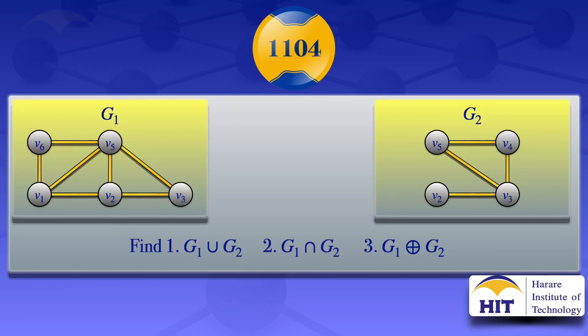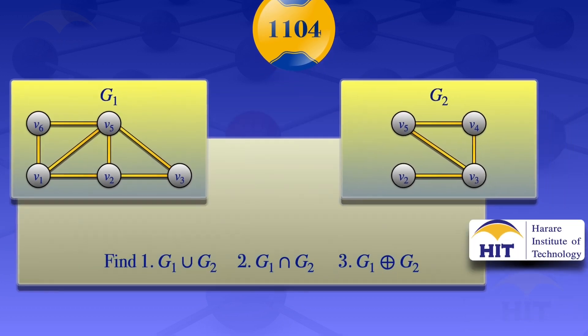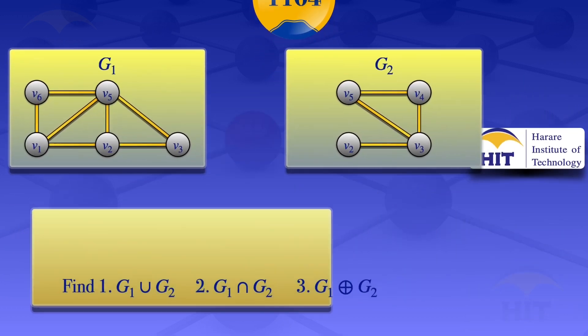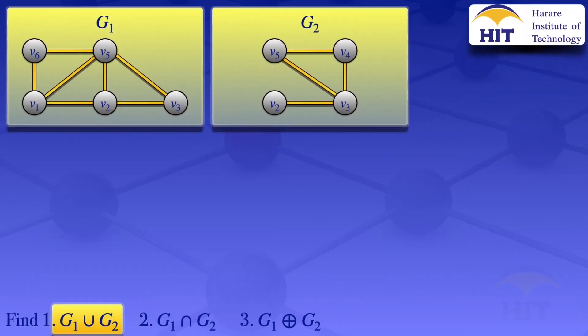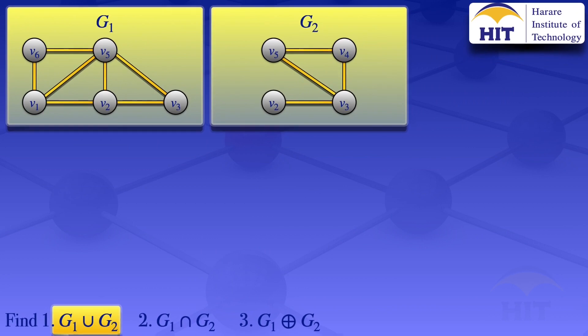Given the two graphs G1 and G2, in this tutorial I'm going to find: number one, the union of G1 and G2; number two, the intersection of G1 and G2; number three, the ring sum of G1 and G2. I'll start by looking at the first question — the union of the graphs G1 and G2.